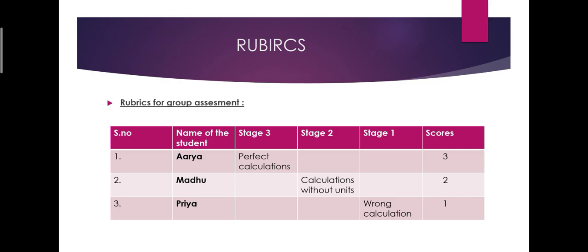Then Madhu, she comes under stage two because she did the calculation but she missed the units. That's why she scored two marks. Then Priya, she comes under stage one. She did all the calculation, but that is wrong. That's why she scored one mark. In this way, the teacher has to assess the group by using rubrics.